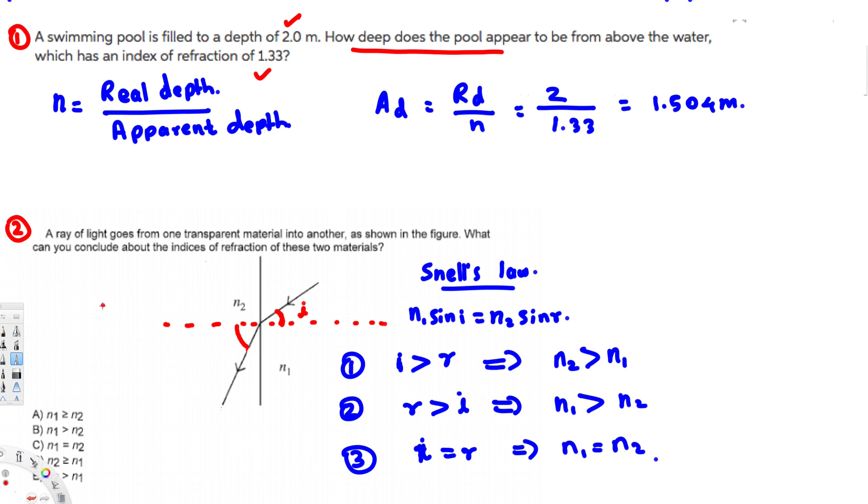This line is normal, so you have to always look at the angle with the normal. This one is i, this one is r, and you can see r is greater than i. So in this case, this is the condition which has to be satisfied in order to satisfy this equation.